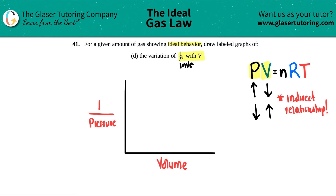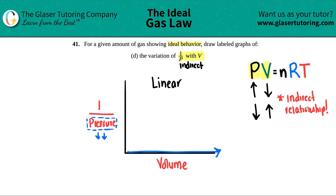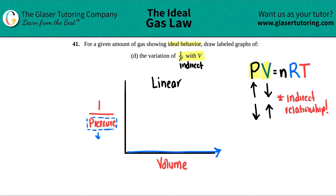Since this is inverse, and PV is indirect, they match, so we're going to get a linear line. Now I just need to figure out the slope direction. As volume increases, the actual pressure is dropping. But when you divide by a lower and lower number, 1 over P gets bigger and bigger. So as volume increases and 1 over P increases, we should see a linear positive slope.